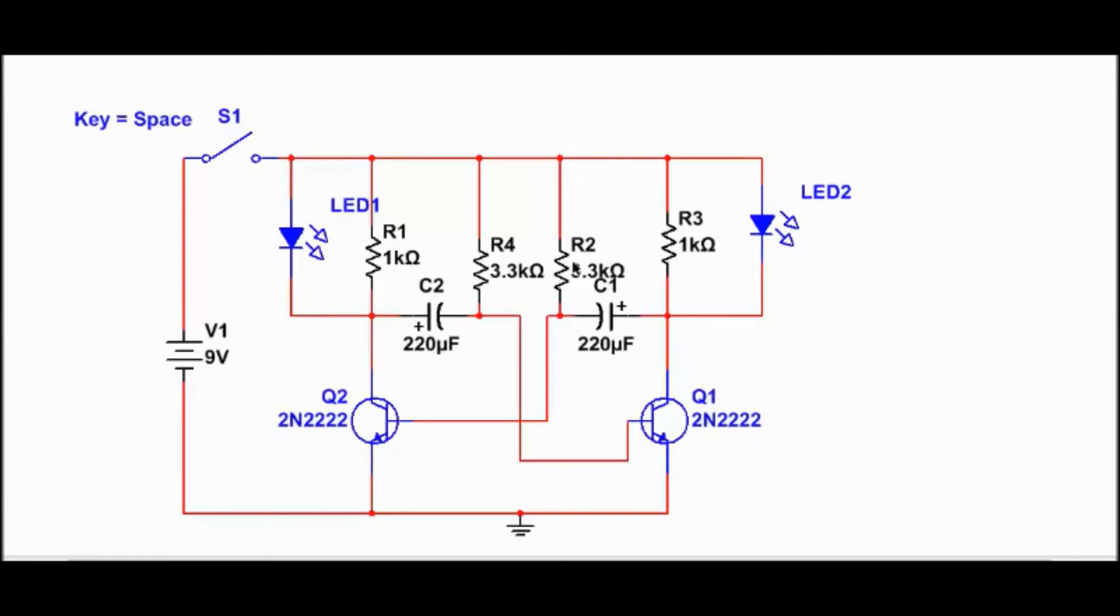However, this resistor here and this capacitor here is connected in series. Also, this resistor here, this resistor here, and this capacitor is connected in series. Likewise, the battery here is connected in series with the switch. So, we have a couple series connections and a couple parallel connections.